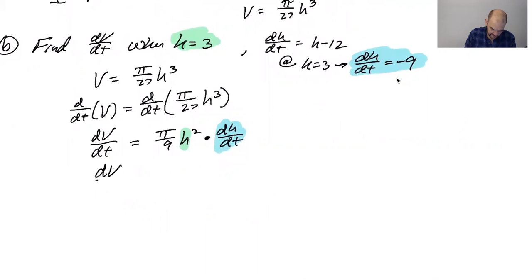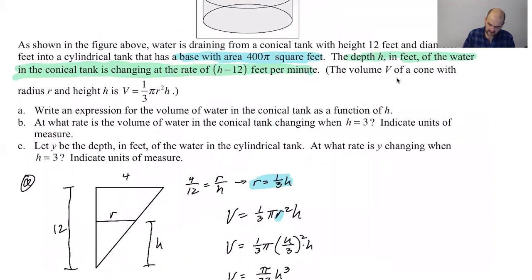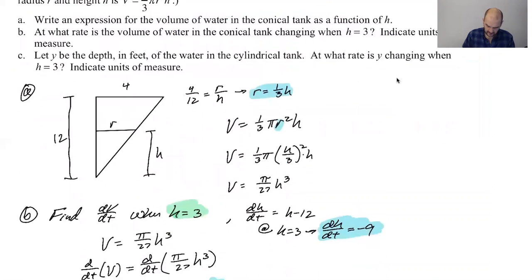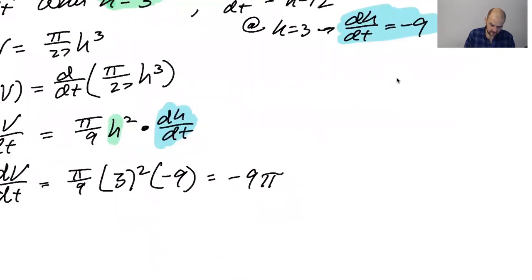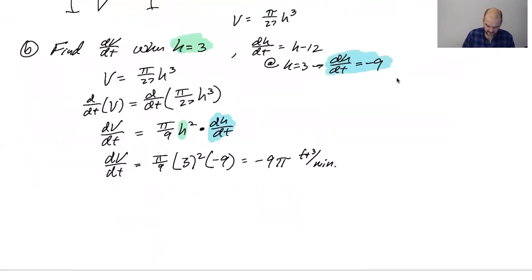So here I'm going to put, dH/dt is H minus 12, which means at H equals three, dH/dt is going to be three minus 12, negative nine. So what I'm going to do is I'm going to replace dH/dt with negative nine. So I'm going to say dV/dt is pi over nine. H is three squared, negative nine, which gives me overall negative nine pi. What are the units? Feet per minute. This is volume. So it'll be cubic feet. So feet cubed per minute.